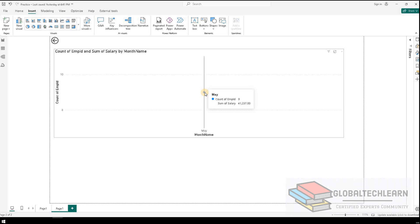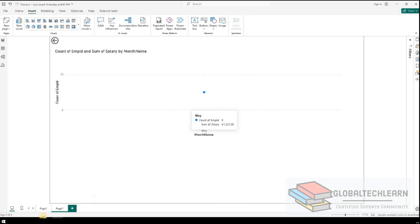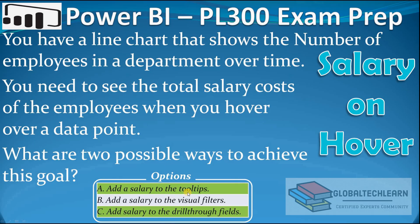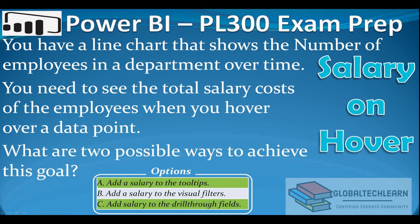With this we are able to achieve the total salary cost upon hover using the drill through feature. Going back to the question, option A — add salary to the tooltips — and option C — add salary to drill through fields — are the correct answers. If the question asks for only one option, we should go with option A as it is the direct solution. If it asks for two possible ways, go with option A and C, since option C is more of a workaround.